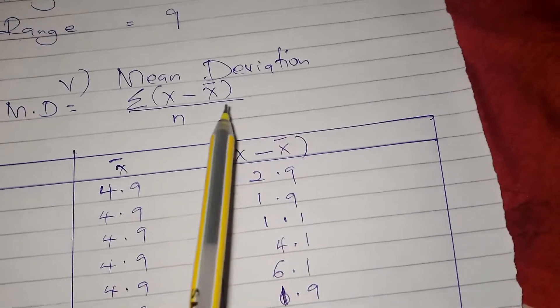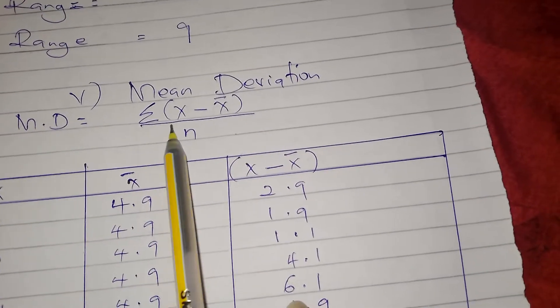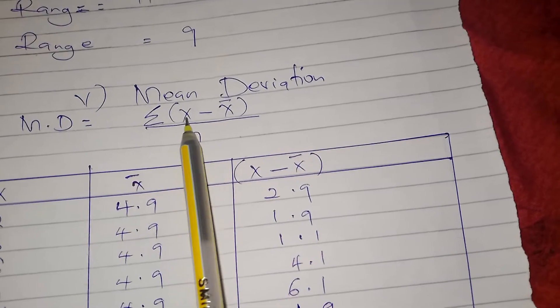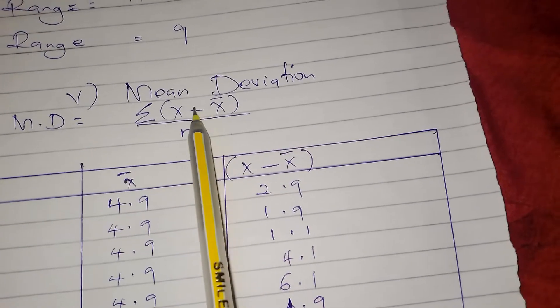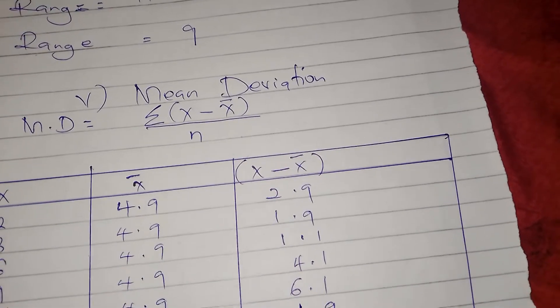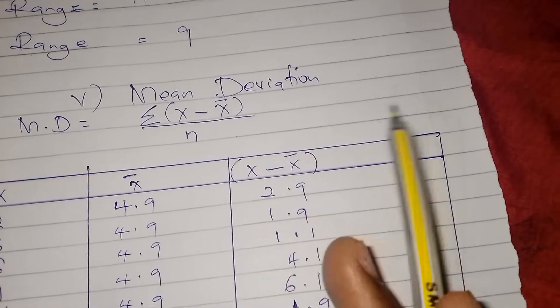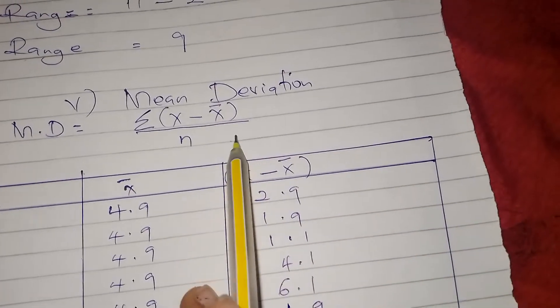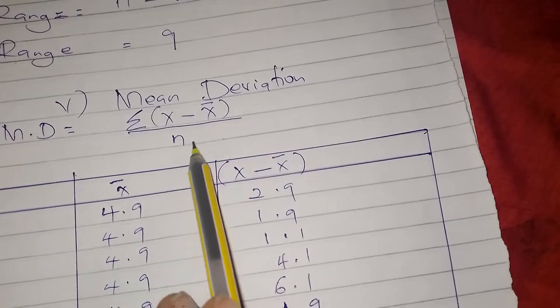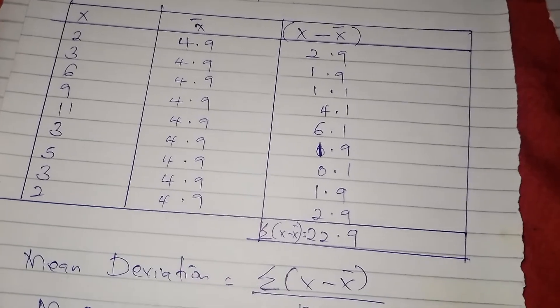Mean deviation: the formula is summation of X minus X bar out of n. So in order for us to get mean deviation, we have to have X and then X bar, then we subtract them, we get the summation, and then we divide by n. N is the number of observations.